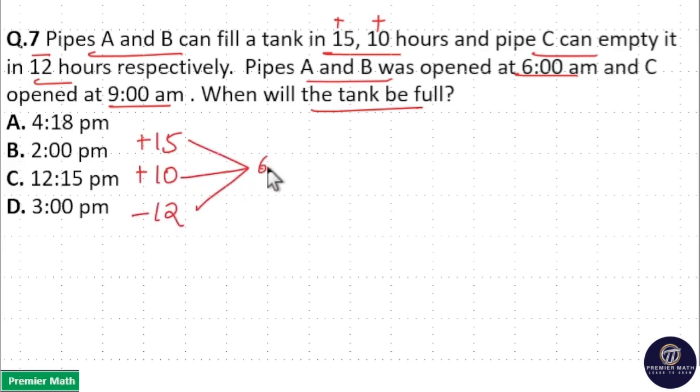Now take the LCM. LCM is 60, meaning total tank capacity is 60 liters. 15 goes 4 times in 60, 10 goes 6 times in 60, 12 goes 5 times in 60. That is, A can fill 4 liters per hour, B can fill 6 liters per hour, and C can empty 5 liters per hour.